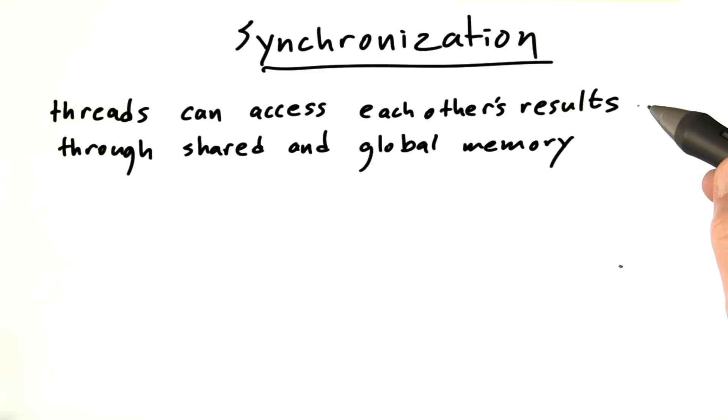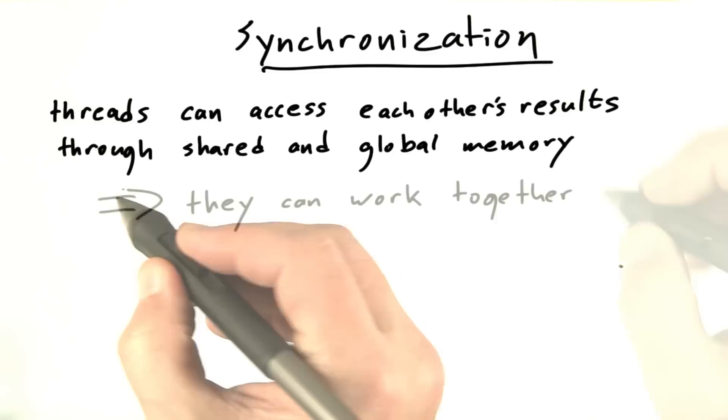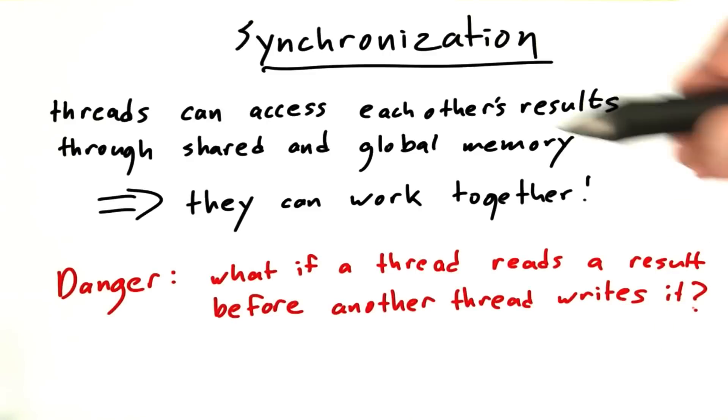Now we know that threads can access each other's results through shared and global memory. This means they can work together on a computation. But there's a problem.